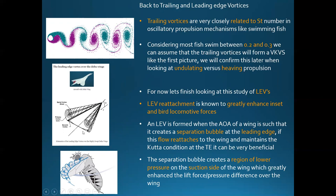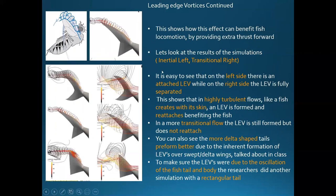We already talked about leading edge vortices when we looked at delta wings — it's similar to what's happening on a bee's wing. Imagine turning the bee sideways and you get exactly what this simulation shows on the fish — the fish is gaining more thrust from this effect. These are the results from the simulation: inertial regime on the left, transitional on the right.